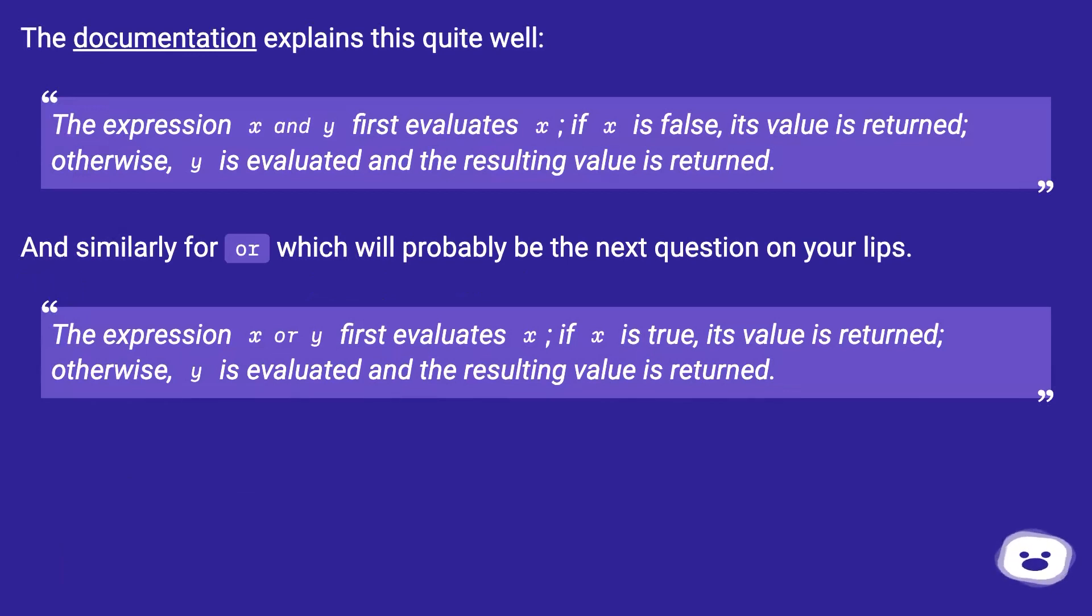The documentation explains this quite well. The expression x and y first evaluates x. If x is false, its value is returned; otherwise, y is evaluated and the resulting value is returned.